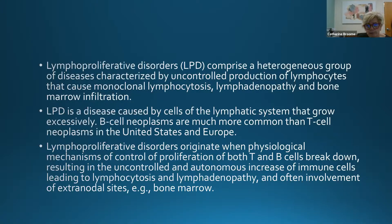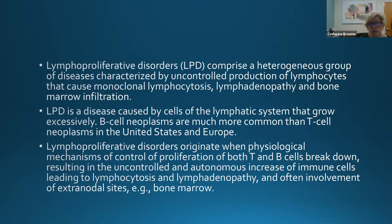The peripheral blood smear generally shows mature lymphocytes — round cells with a high nuclear-to-cytoplasmic ratio and just a thin rim of cytoplasm. We don't see nucleoli or indications of immaturity. We also see smudge cells, also called basket cells — just broken lymphocytes. CLL cells seem a little more delicate than normal lymphocytes, so these smudge cells appear on peripheral smear.